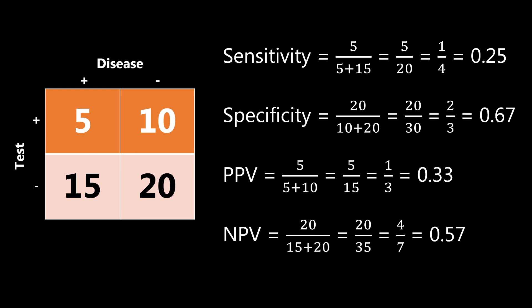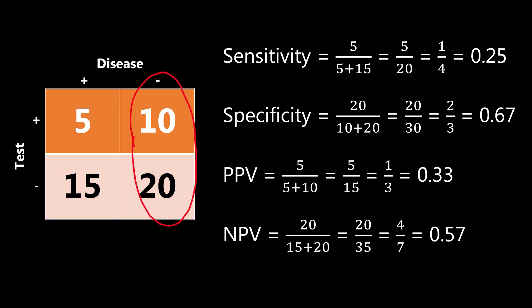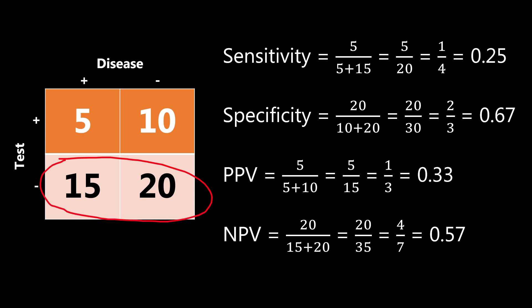Let me go through these definitions one more time. Sensitivity: all the people who are positive for the disease, of that, who actually tested positive. Specificity: all the people who are negative for the disease who tested negative. Positive predictive value: all the people who tested positive who actually have the disease — the true positives. Negative predictive value: all the people who tested negative who actually do not have the disease — the true negatives.